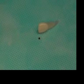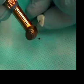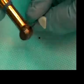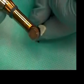For the access cavity we're going to start with the number two round burr on the high speed. Remember in the lab and everywhere else, it's good to do things the way you're going to do them in clinic. Take the round burr and you're going to start at an angle like that.